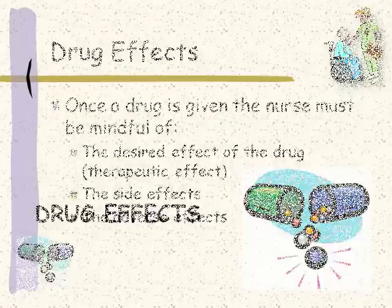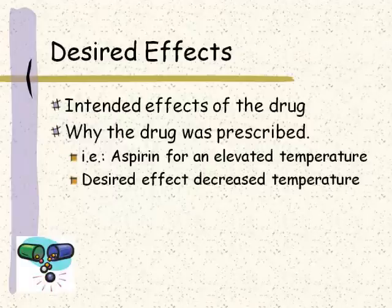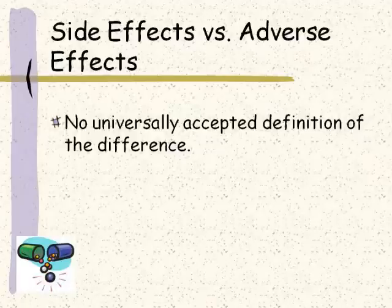Once a drug is given, the nurse must be mindful of the desired effect of the drug — some people call that the therapeutic effect — as well as the side effects and the adverse effects. The desired effects are why we're giving this drug and what we intend it to do. For instance, if a person has a fever and we give them aspirin, we intend for that aspirin to decrease the person's temperature. But drugs typically have side effects and adverse effects, and there is no universally accepted definition of the difference between these two.